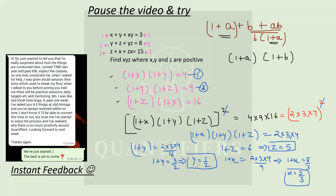So students, you can see I have the value of X, the value of Y, and the value of Z. I need to find the product X into Y into Z. X is five by three, Y is one by two, and Z is five. So this product comes out to be 25 by six. That is the answer.